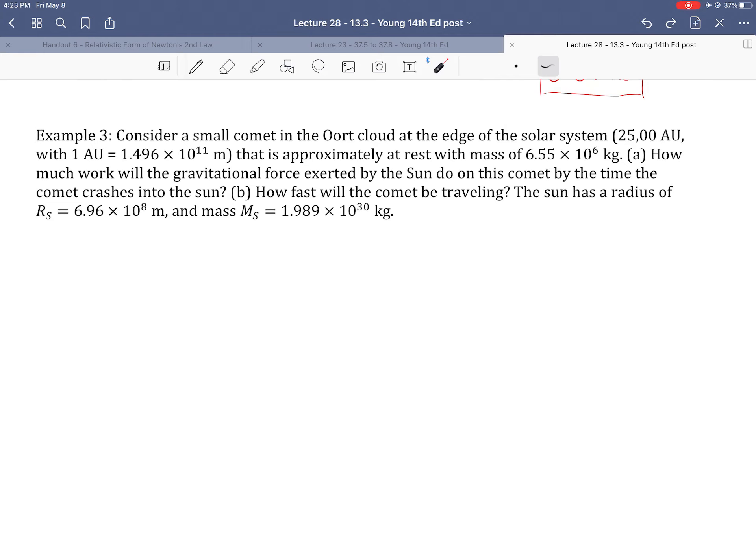So part A, how much work will the gravitational force exerted by the sun do on this comet by the time the comet crashes into the sun? So this is a thing. This is like when comets come and they don't come back for a long time. That's because what happens is we think there are a bunch of comets, millions or trillions of them in this spherical area.